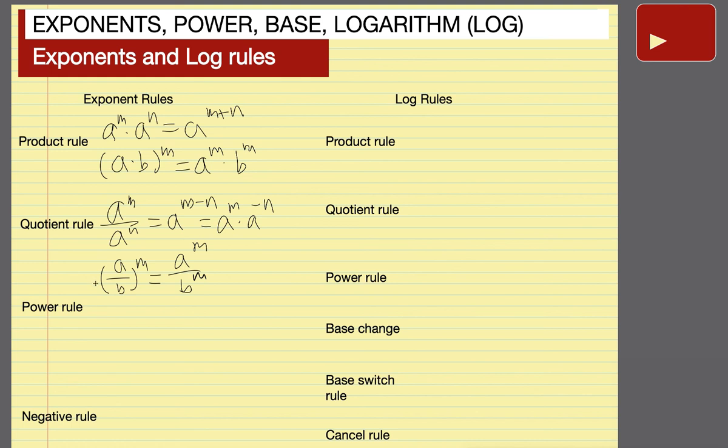Power rules are interesting. A to the m and then to the nth power is equal to a to the power of m times n.